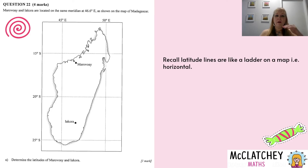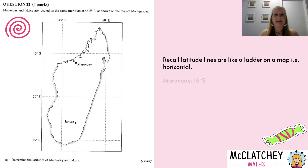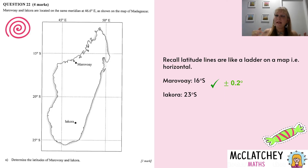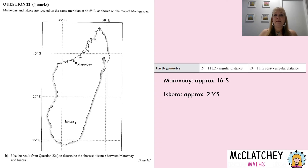Latitude lines are like a ladder — we climb up the ladder and they're horizontal lines, so be careful not to get them confused when asked to find latitudes. Using my ruler, I determined Maravoy was about 16 degrees south and Icora about 23 degrees south. The QCAA would allow a difference of about 0.2 degrees in either direction — so 15.8 to 16.2 for Maravoy and 22.8 to 23.2 for Icora. Make sure you include the degree symbol and indicate degrees south, not just write 16 and 23.